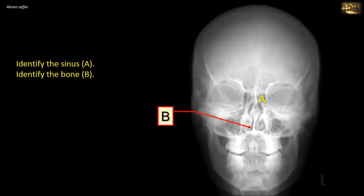Identify the sinus. This paranasal sinus is located between the orbit and the nose, and it is the ethmoidal air sinus or ethmoidal air cells. The other paranasal sinuses shown here are the frontal and the maxillary.